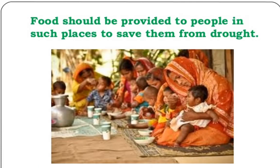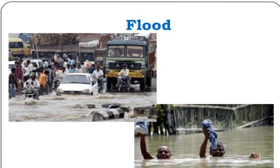We should provide food to people to save them from the effects of drought. Next is flood, which normally happens in the rainy season. Drought and flood are opposite natural disasters — in drought there is a scarcity of water, while in flood there is an excess amount of water and the water level increases.